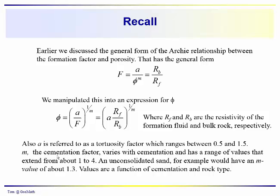M has values that range from about 1 to 4. As an example, something which is completely uncemented, an unconsolidated sand for example, would have an M value of about 1.3. So obviously these values, A and M, probably vary from one type of rock to another, whether you're working with sandstone or limestone, and the type of cement and the degree of cementation. So these are the equations that should look familiar to you.